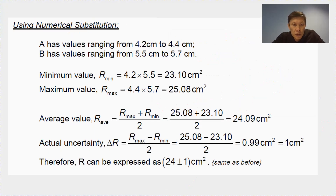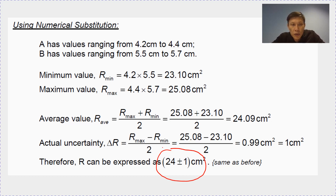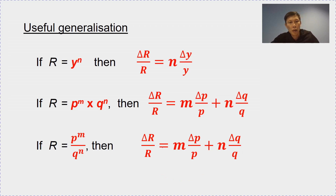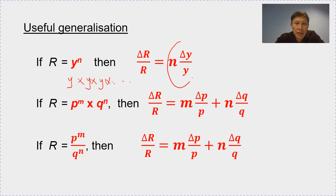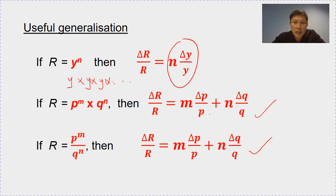In the lecture notes, I also use numerical substitution to prove that the result will be the same. As a useful generalization for multiplication and division: y to the power of n is simply y times y, n times. Since for multiplication you sum up the fractional uncertainty, if you sum it n times it's the same as multiplying the fractional uncertainty by n. This also follows for division, because for both multiplication and division you are always summing up the fractional uncertainty.